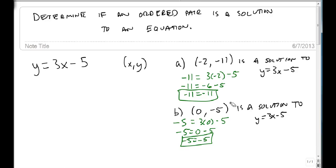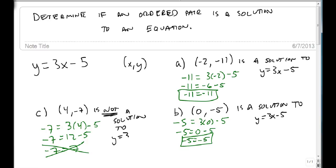The last point that I want to look at, just to show you a counterexample, suppose I have the point 4 minus 7. Is that a solution? So again, wherever we see an x, we're going to put a 4, and whenever we see a y, we're going to put a minus 7. So we get minus 7 equals 3 times 4 is 12. 12 minus 5 is 7. Notice 7 does not equal minus 7. So this did not come out true, and so this is not a solution to y equals 3x minus 5.